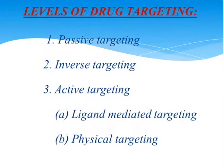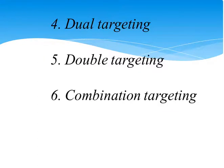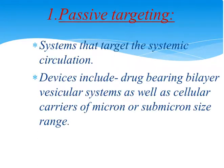Next are the levels of drug targeting. There are various levels of drug targeting like passive targeting, inverse targeting, active targeting, dual targeting, double targeting and combination targeting. In passive targeting, the systems are targeted to systemic circulation and the devices include drug-bearing bilayer vesicular systems as well as cellular carriers in micron or submicron range. After targeting in systemic circulation, they release the drug and are taken up by the reticuloendothelial system.